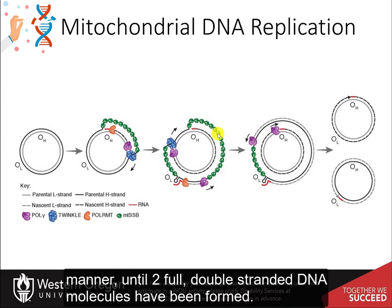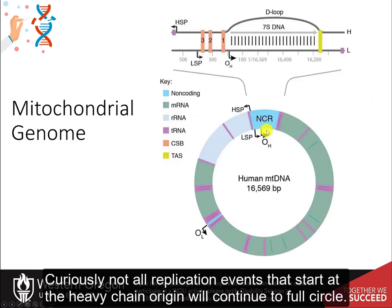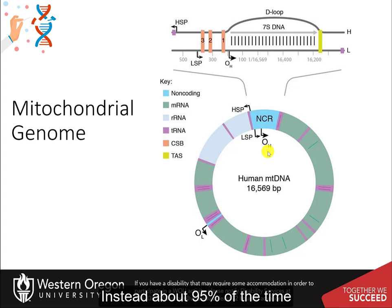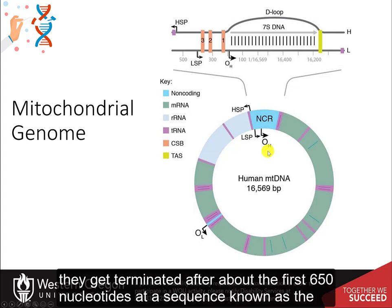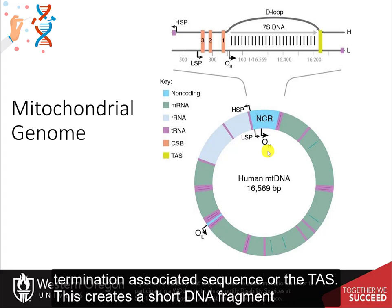The synthesis of the two strands then proceeds in a continuous manner until two full double-stranded DNA molecules have been formed. Curiously, not all replication events that start at the heavy strand origin will continue to full circle. Instead, about 95% of the time, they get terminated after about the first 650 nucleotides at a sequence known as the termination-associated sequence, or TAS.